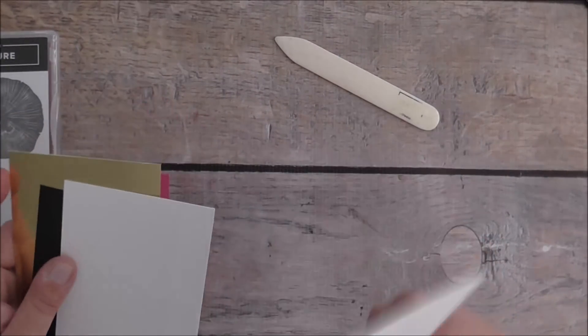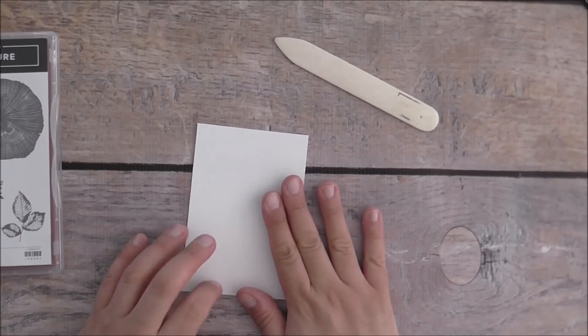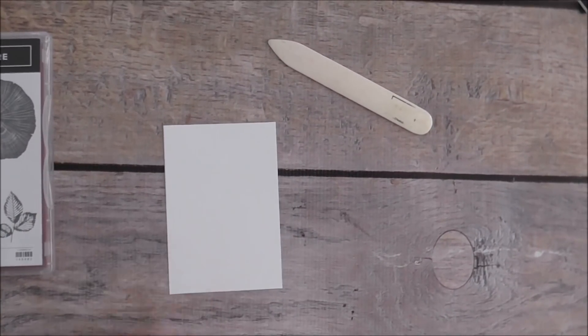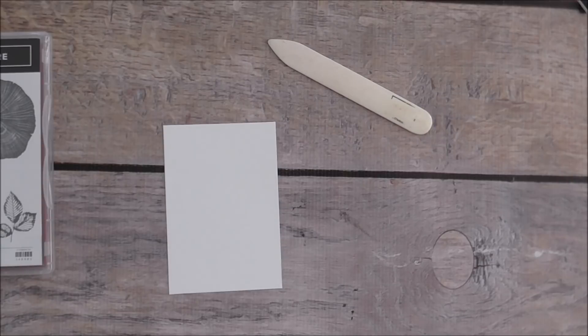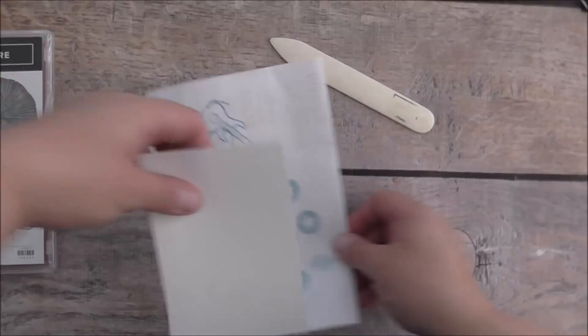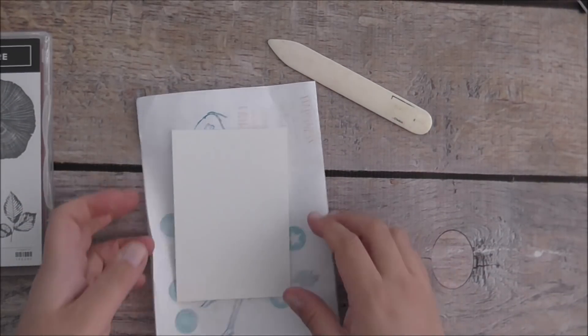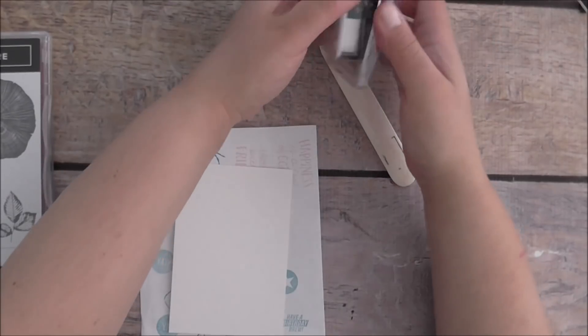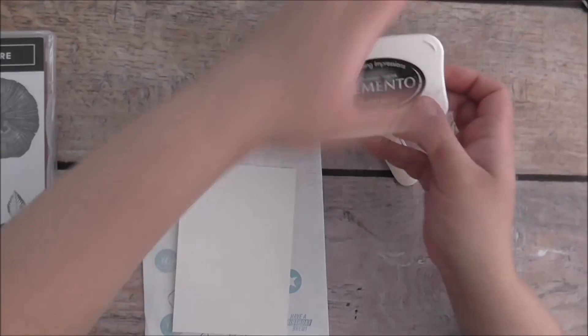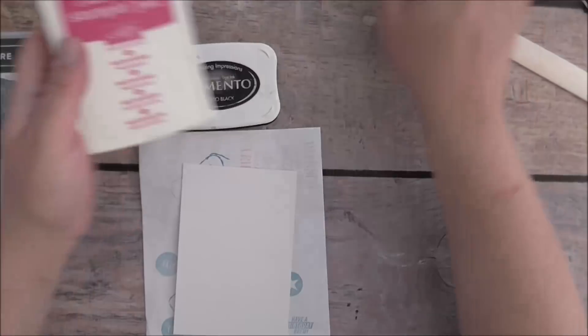I'll grab the smaller piece of cardstock and a piece of scrap paper. I'm going to grab my Memento Tuxedo Black ink - I love this ink - and my Melon Mambo.